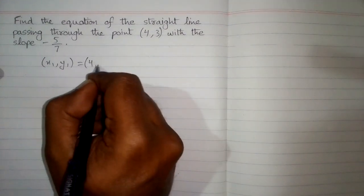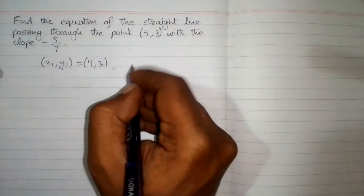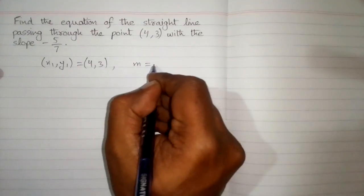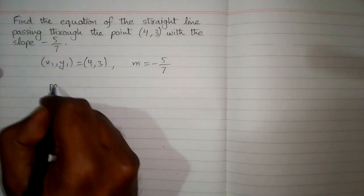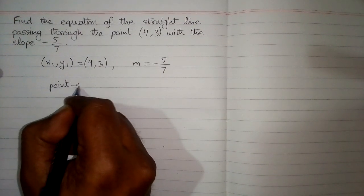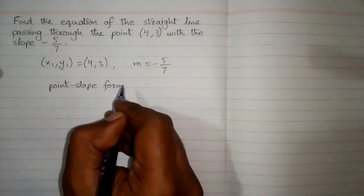(x1,y1) = (4,3), and suppose that this slope is m, so m = -5/7. Now we will use the point-slope form of the equation in order to find out the